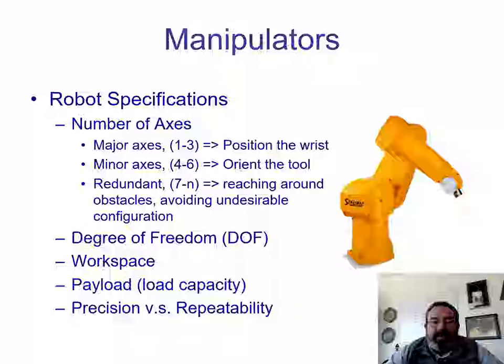For robot specifications, we can take into account the number of axes, the degrees of freedom, the workspace, the payload, precision, and the repeatability of the robot. About the number of axes, we're going to call the major axes, which give us the position of the wrist.